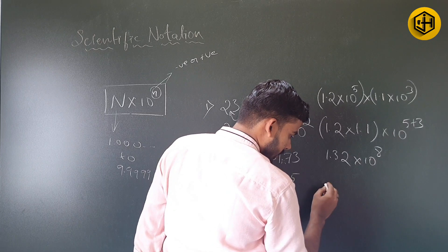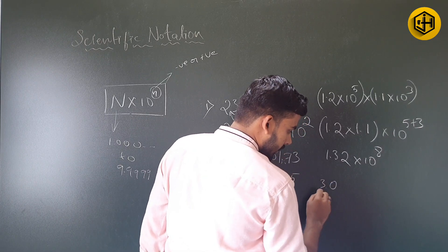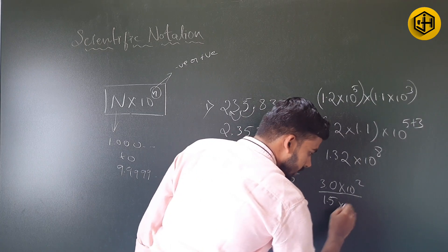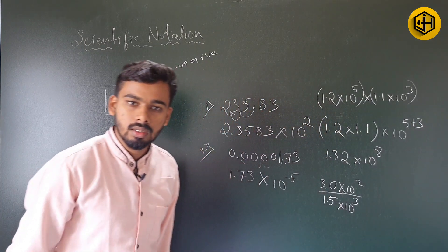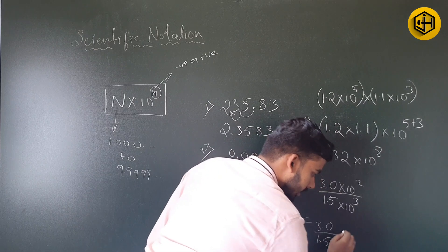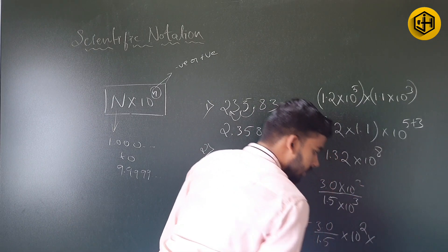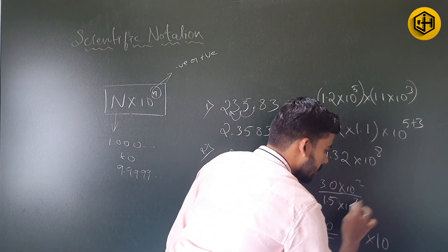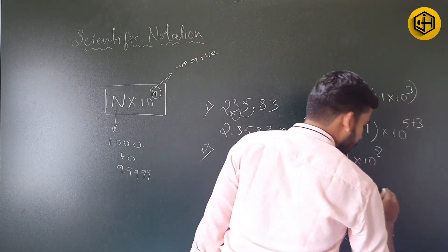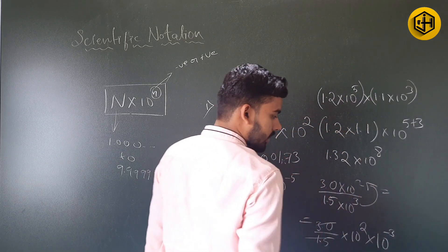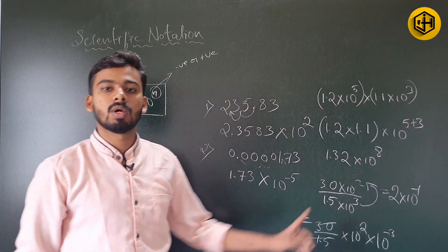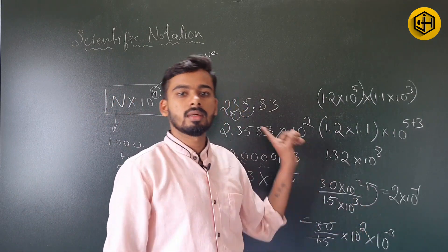For division: 3.0 × 10^2 divided by 1.5 × 10^3. We divide 3.0 ÷ 1.5 = 2.0, and subtract the exponents: 2 − 3 = −1. So the answer is 2.0 × 10^−1. This is how we do division in scientific notations.